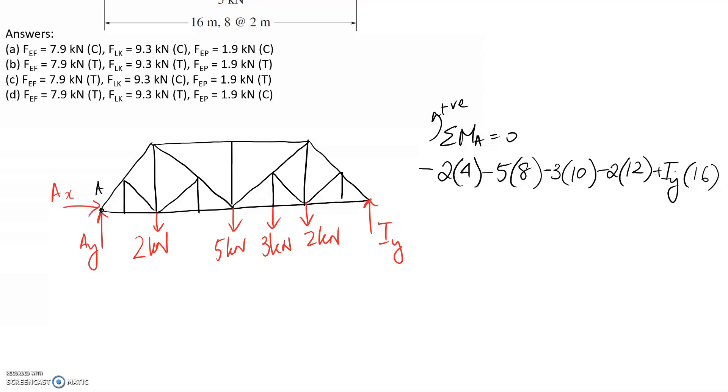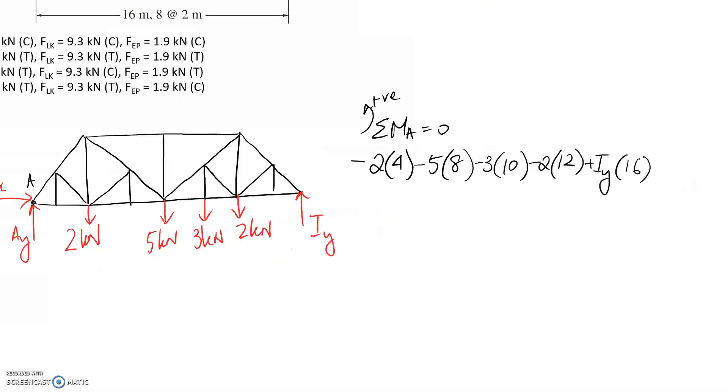If you go through and solve for IY, it comes out to 6.375 kN. It's positive, which means direction was correct. We're now up to the point where I can actually just cut the truss, and if I take the right-hand side, I've already got the reaction.